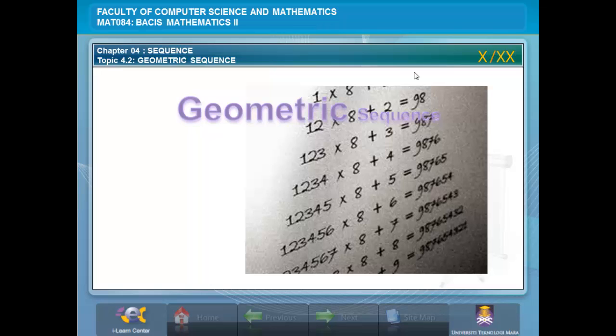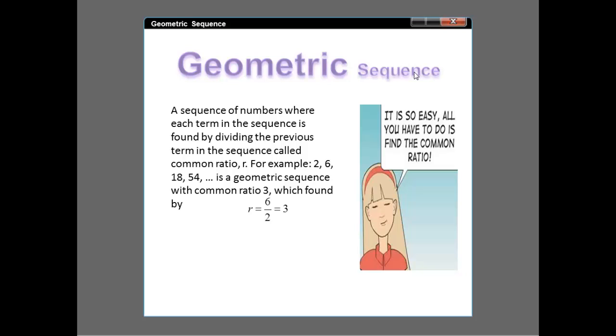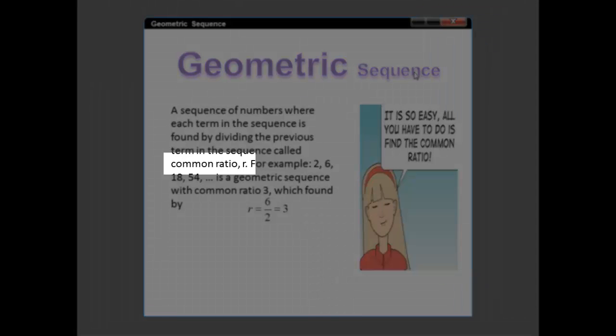Now we will look at the geometric sequence. What is geometric sequence? It is a sequence of numbers where each term in the sequence is found by dividing the previous terms in the sequence, called the common ratio.